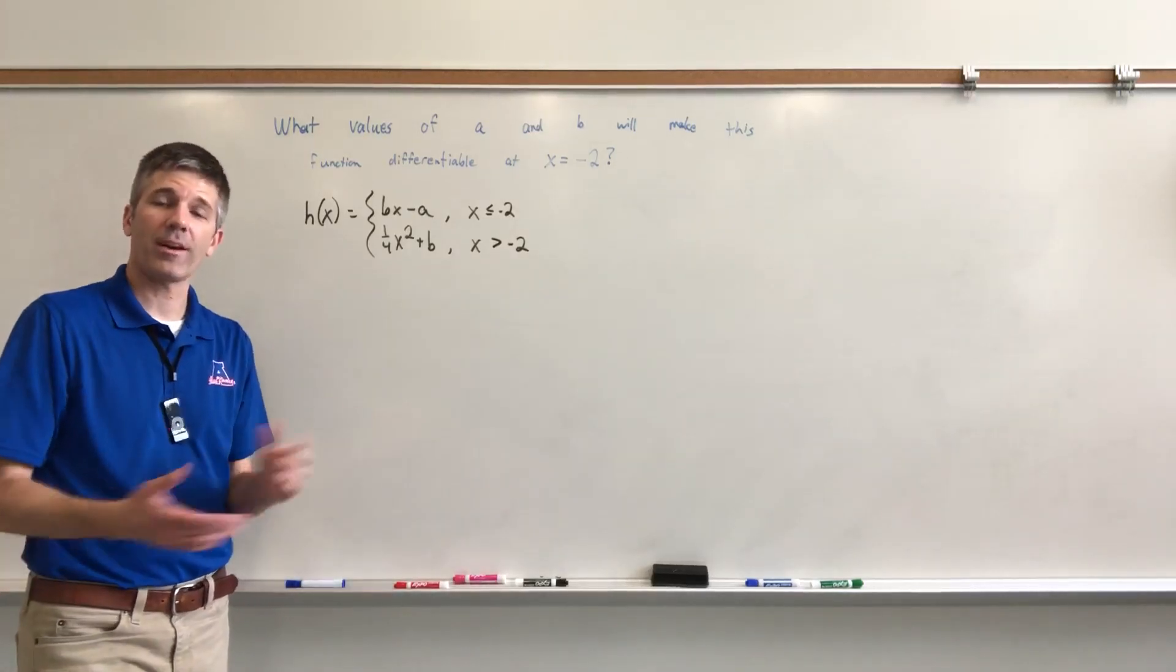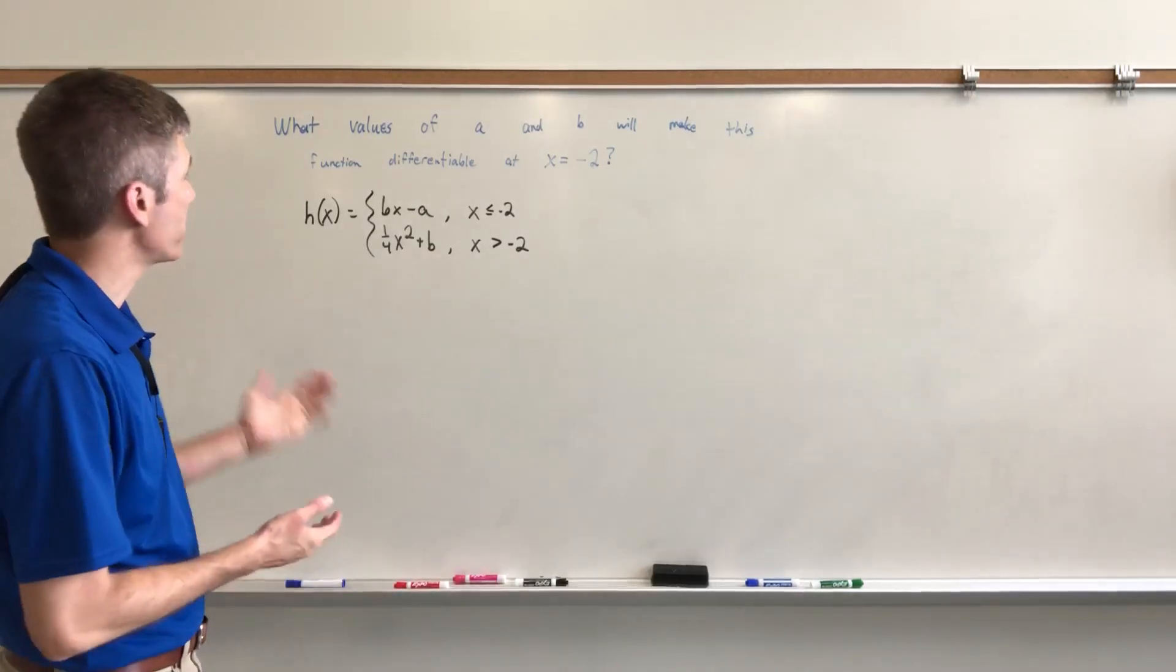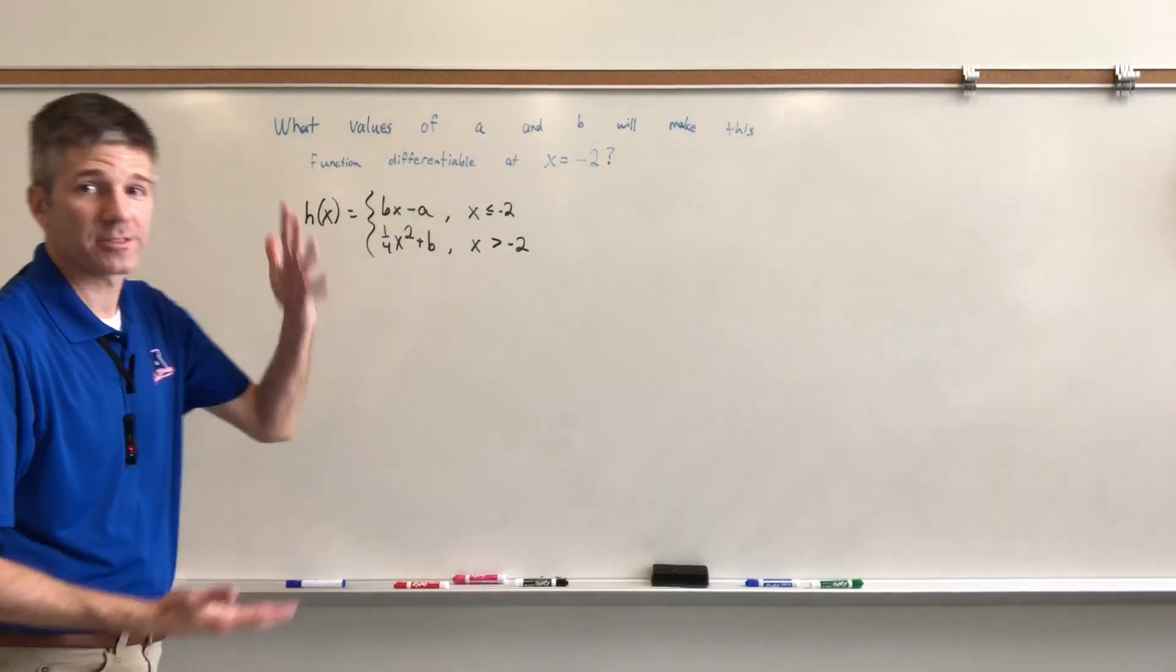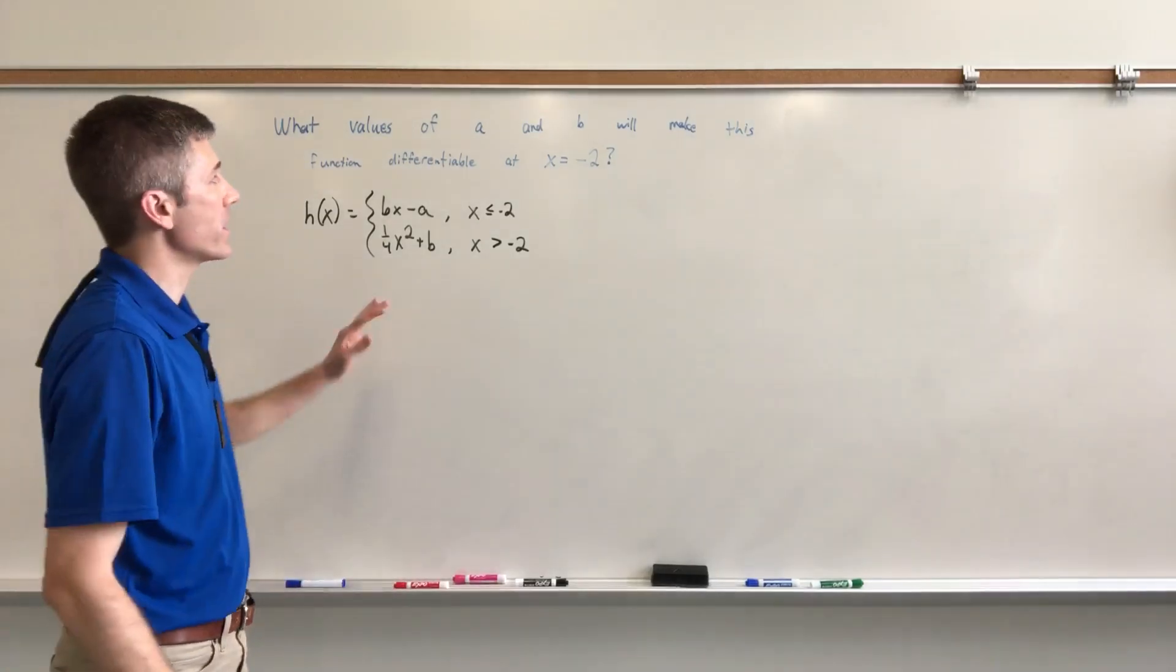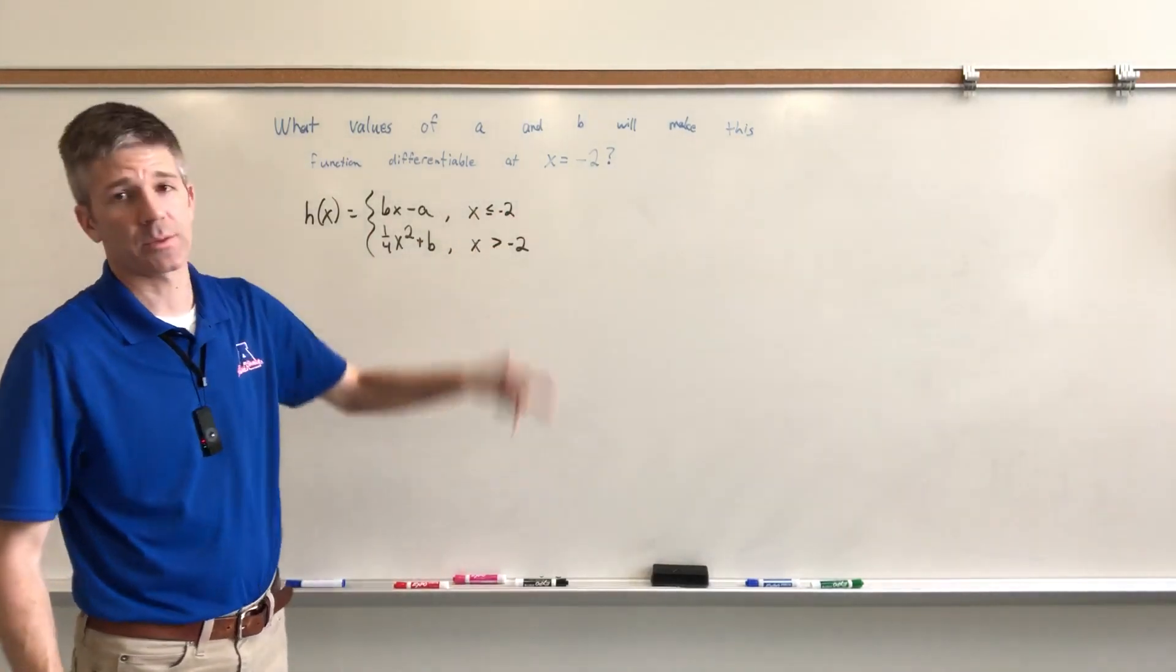The directions are written on the top of the board in a very faint blue marker that I need to throw away. But basically, I need to find the values of A and of B that will make this function differentiable at x equals negative 2.